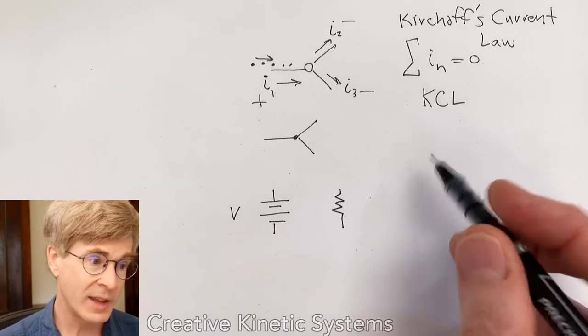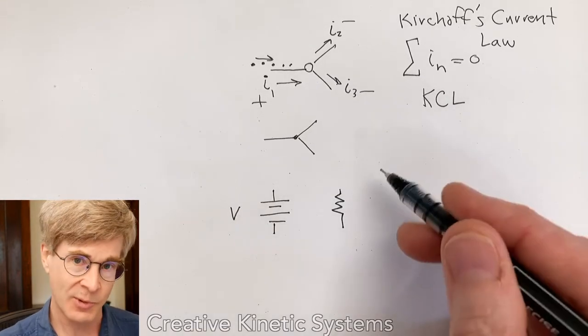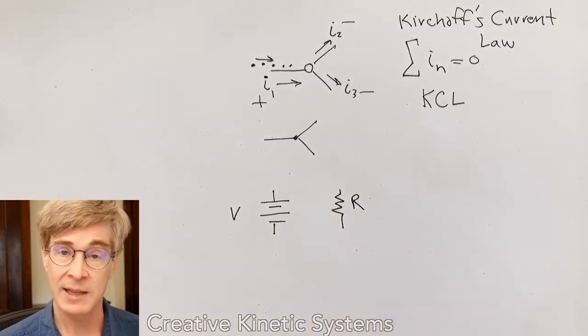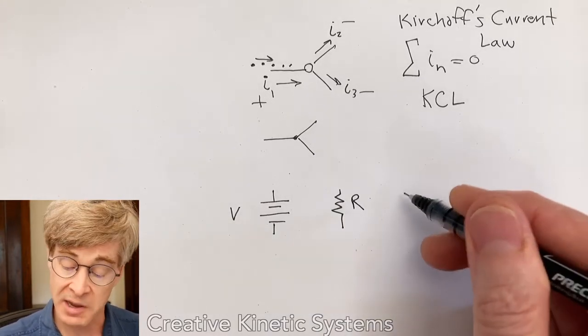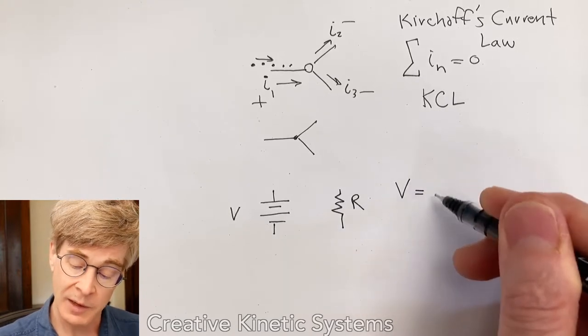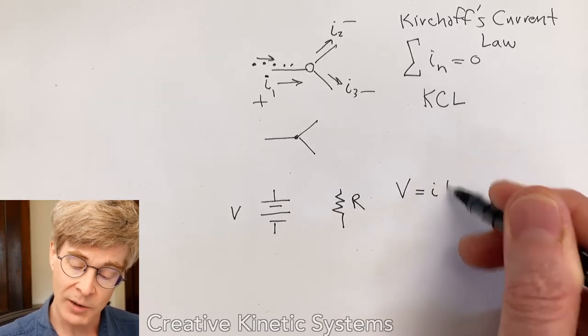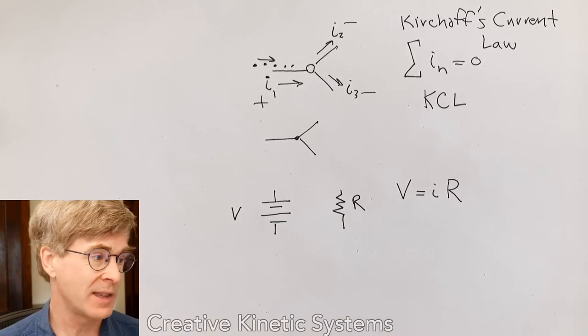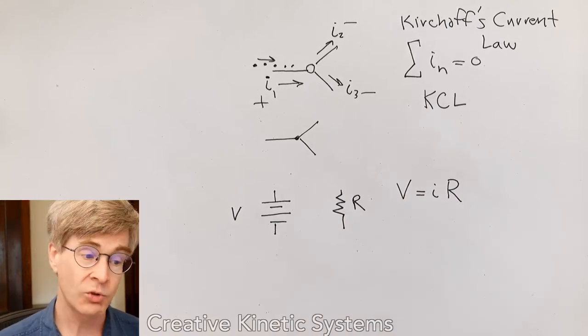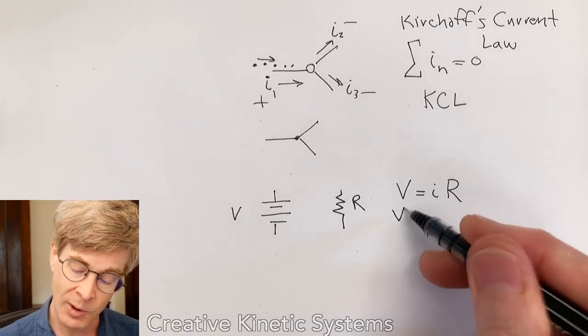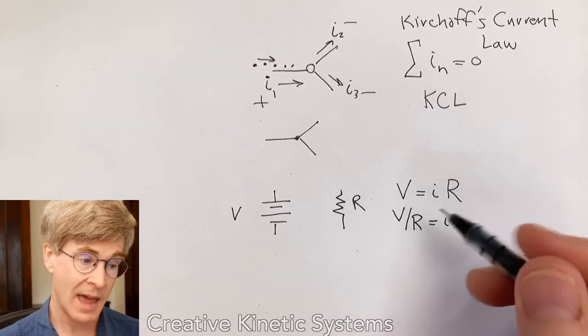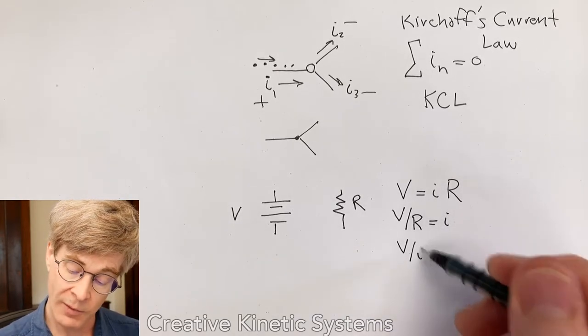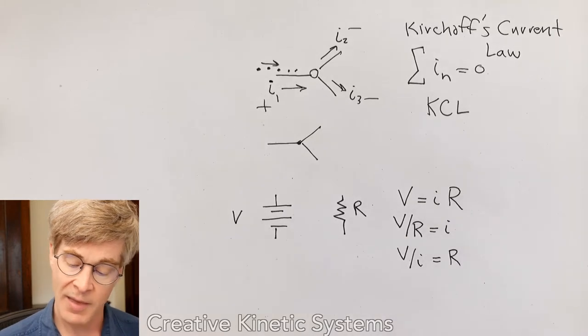So we can say then that there's some property of the resistor, which we're just going to term R, which is its resistance, and it's measured in ohms. And we can observe empirically that you put a potential across it, and you get a current, and these two are related by this constant R. We can trivially rewrite this in a couple of algebraic forms to say that V over R equals I, and that V over I equals R. And they're all saying the same thing.